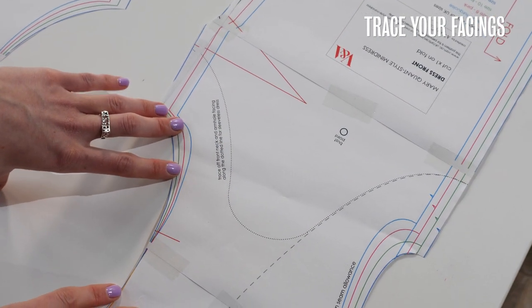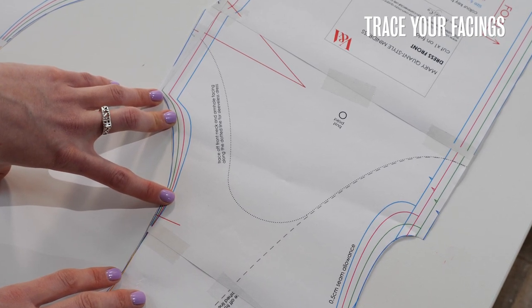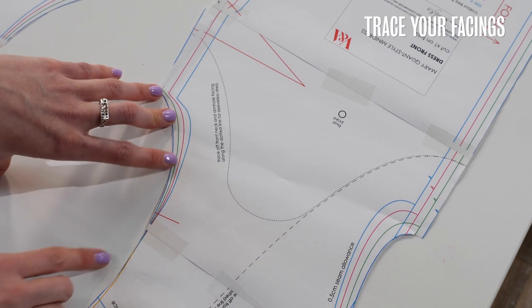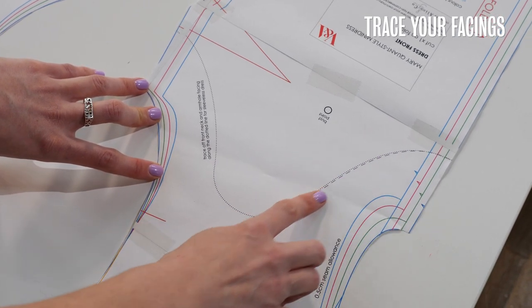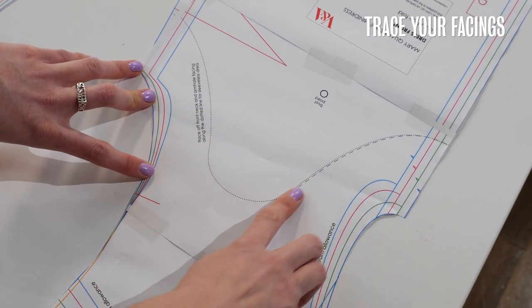So according to whether you're making a dress with or without sleeves there are two different types of facing used to finish the neckline and armholes of the dress. For the sleeveless version follow the dotted line and the with sleeves version follow the dashed grey line.